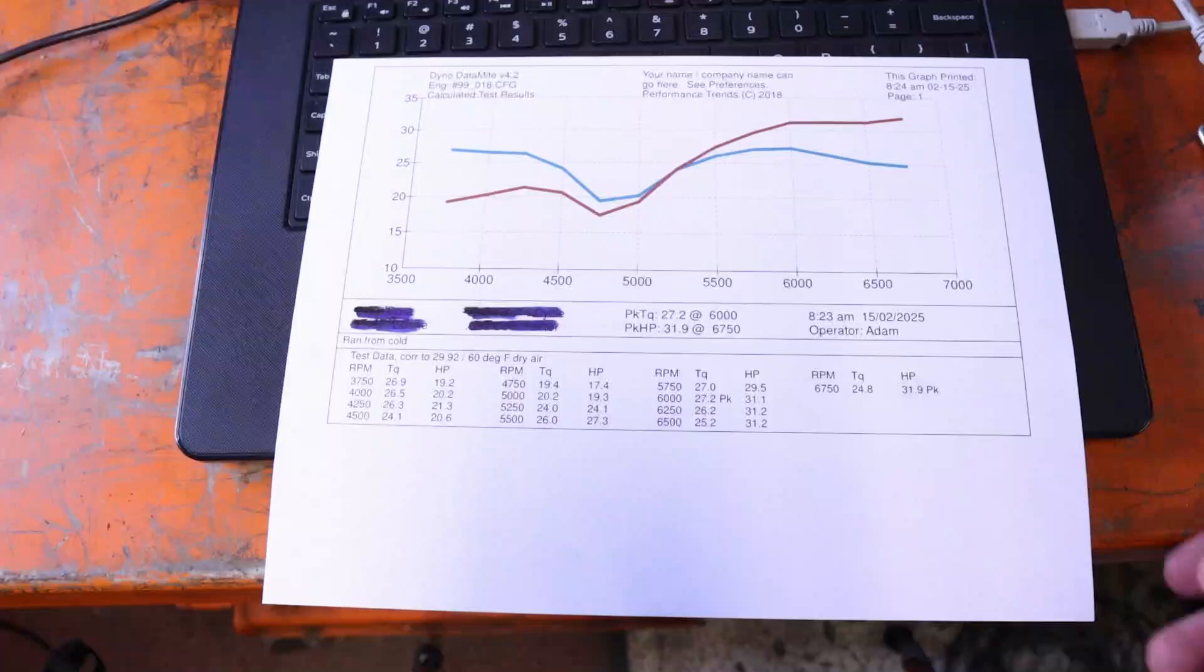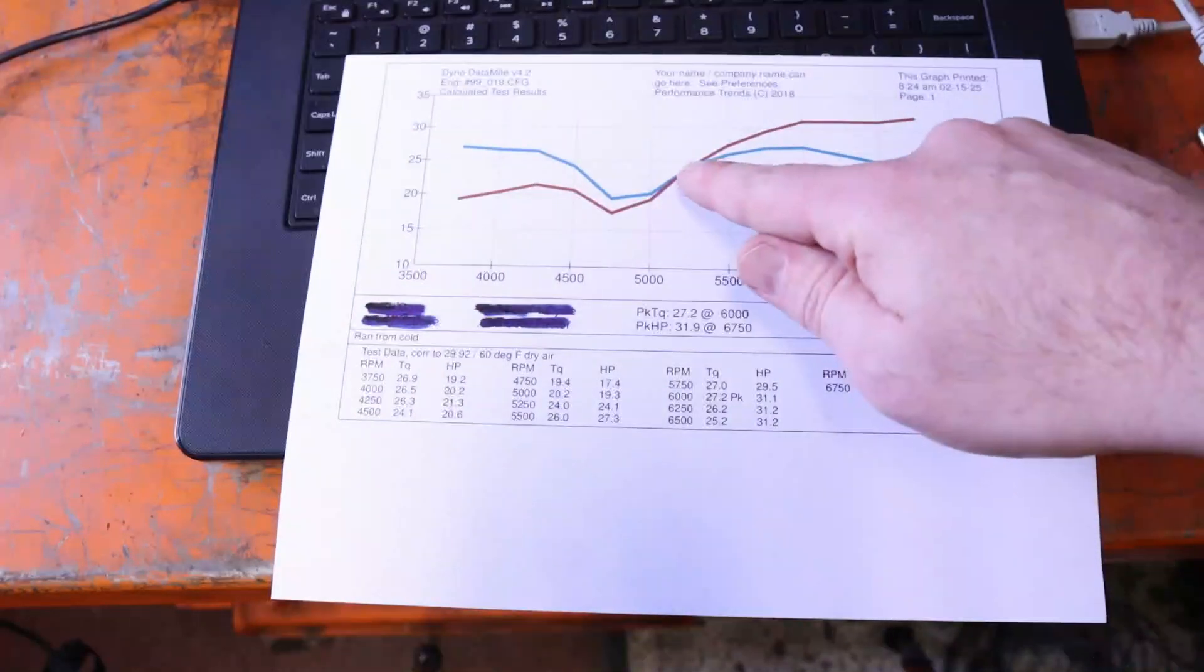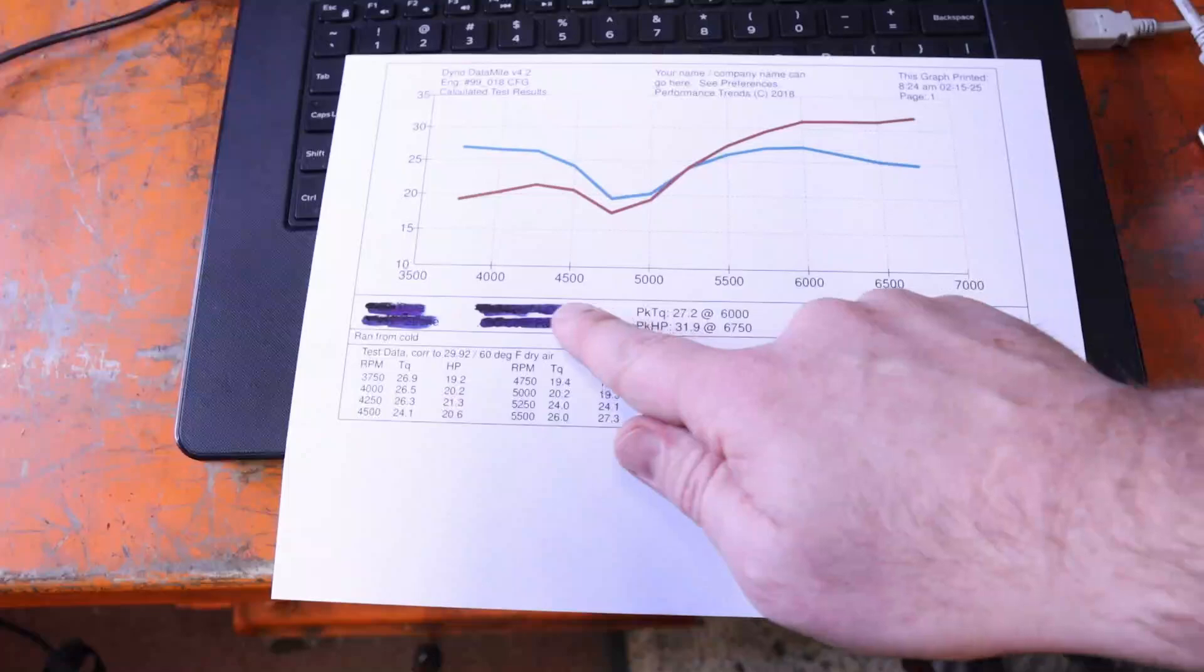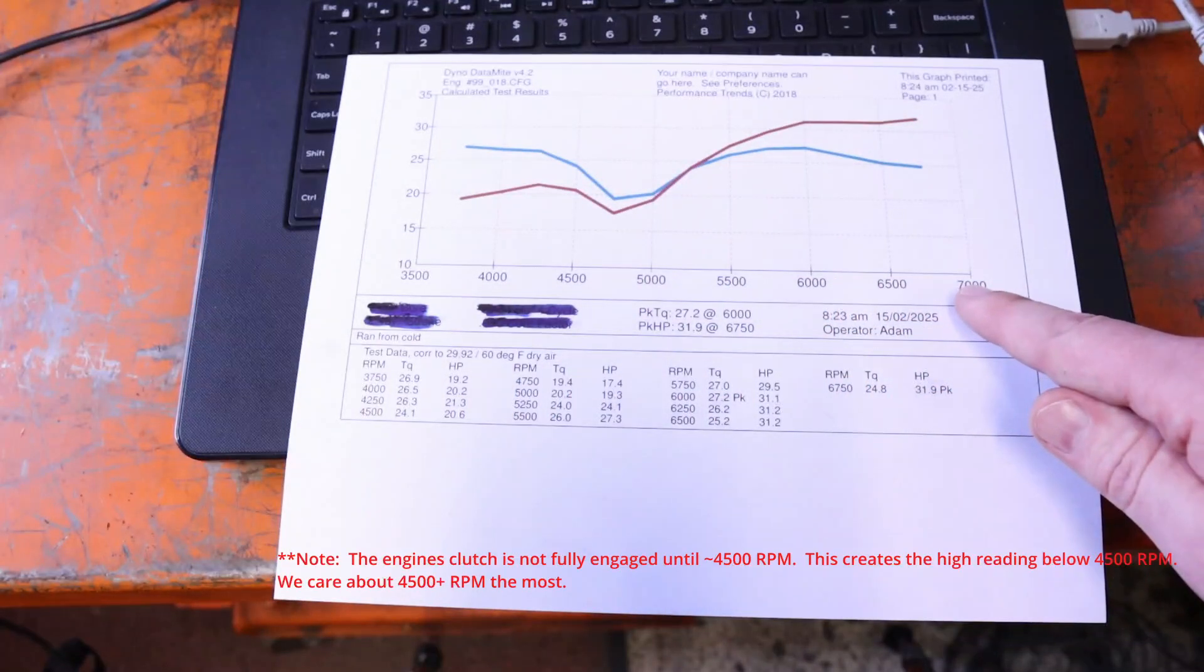After we've successfully completed the dyno run, we get a printout that looks something like this from the computer. You can see both our torque and RPM curves here. This axis is the RPM. Went up to almost 7,000 RPM.